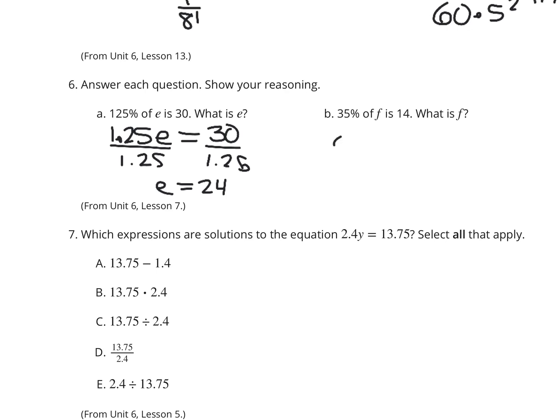35% of F equals 14. What is F? Divide both sides now by 35 hundredths, and you get F equals 14 divided by 35 hundredths, 40.